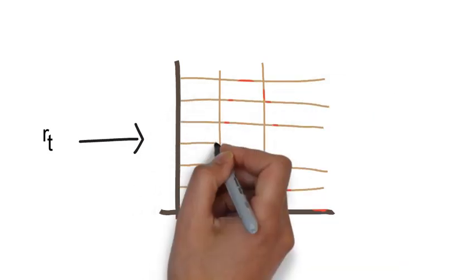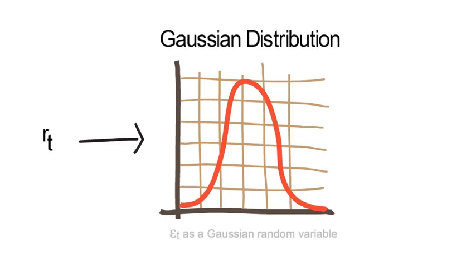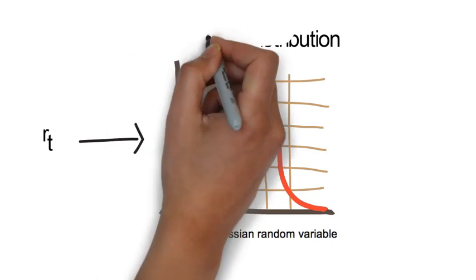For example, if conditional on FT minus 1, RT shall follow a Gaussian distribution, you have to model epsilon t as a Gaussian random variable.